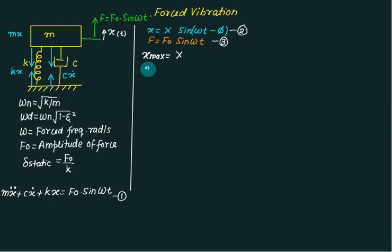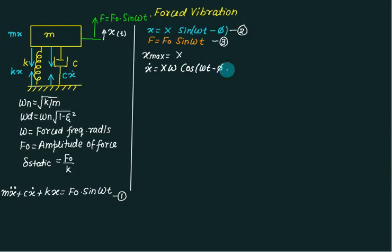Similarly, I will find out the velocity. Velocity x-dot equals capital X times the derivative of sin(ωt - φ). Since the amplitude is constant, we differentiate: the derivative of sin is cos, and by the chain rule the derivative of (ωt - φ) is ω. So velocity equals X·ω·cos(ωt - φ). The maximum velocity is X times ω, since the maximum value of cos is 1. This shows that displacement and its derivative are perpendicular to each other.